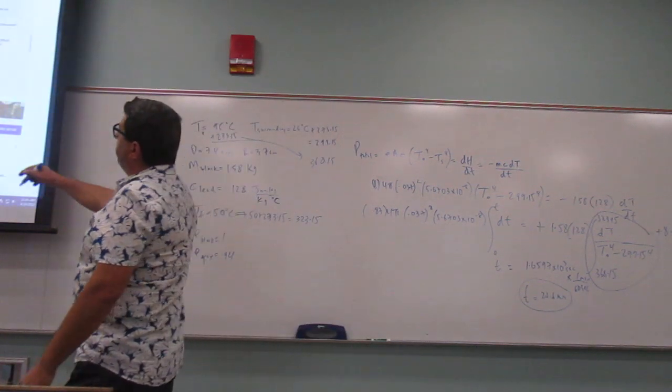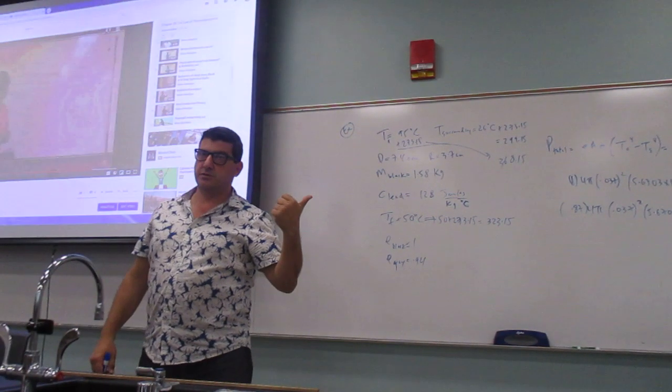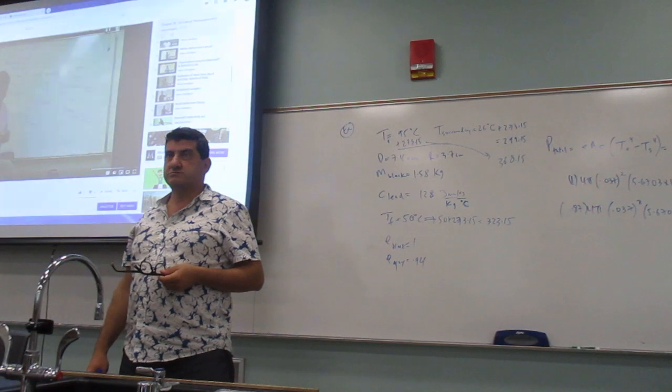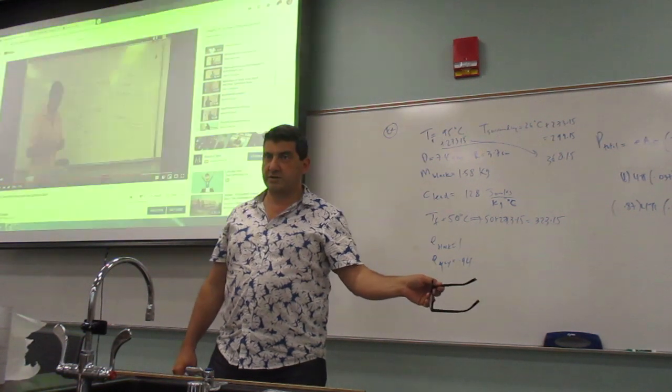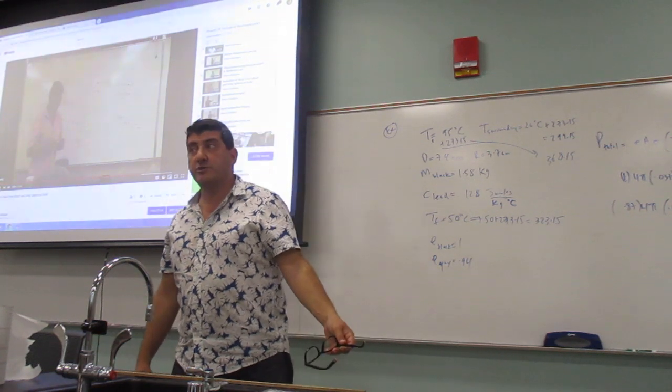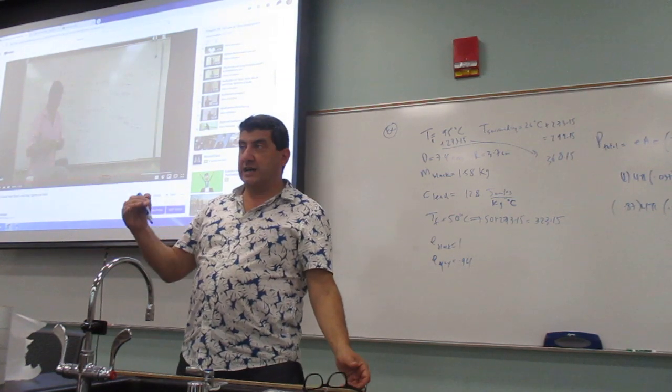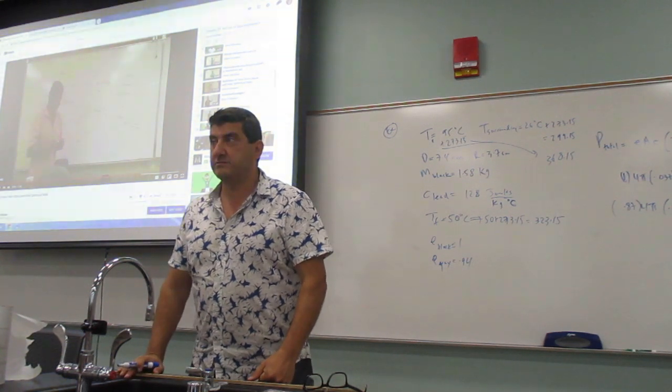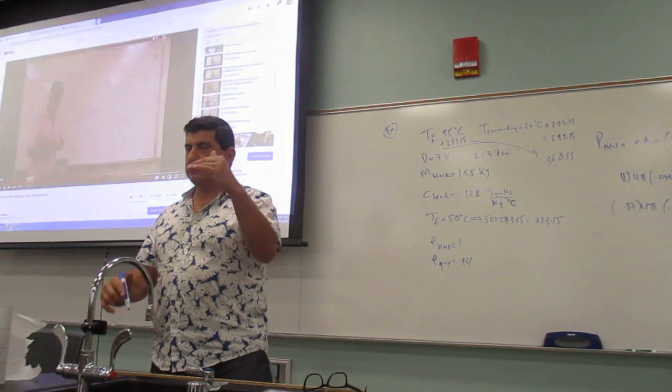So black object will cool down faster than the non-black object. So if you're drinking coffee and you want it to stay warm longer, what should you do? Put creamer in there. Black coffee will cool quicker than the cream coffee. But when you put creamer, what tends to happen? Cool down. The creamer is usually in the ice, right? So the creamer cools down the coffee by itself. But then after that, which one cools down quicker? Do you see what I'm trying to say?